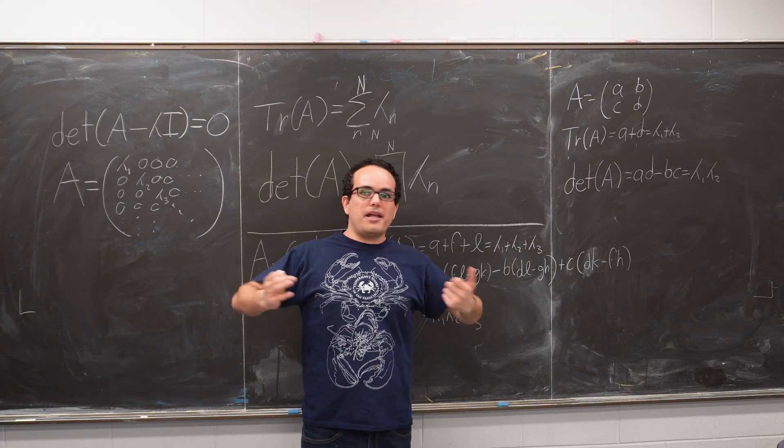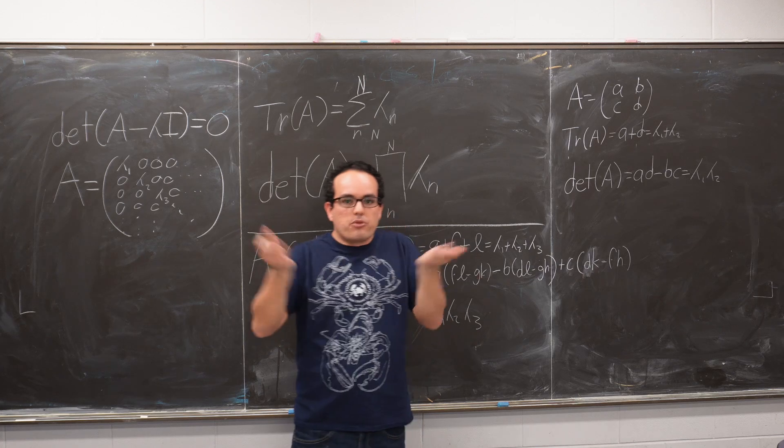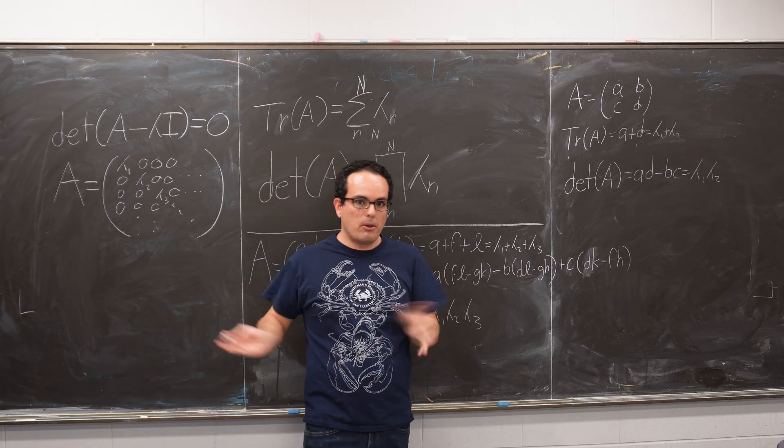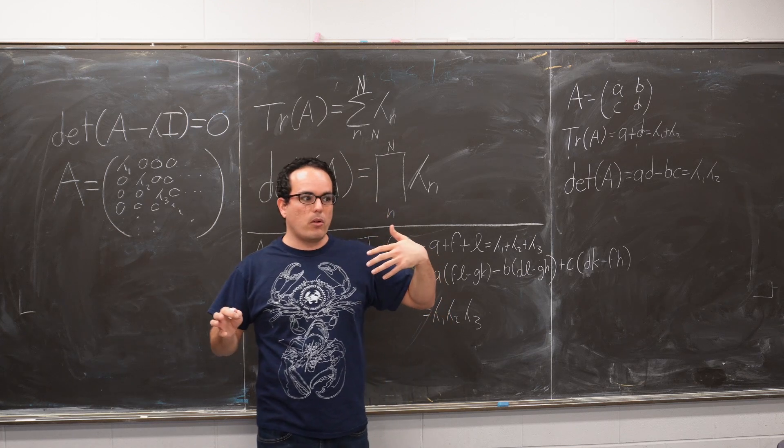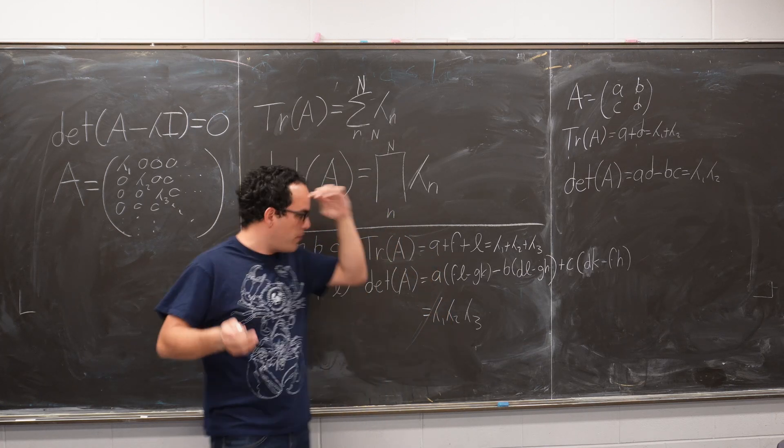And you may be thinking, well, I have a 3x3 matrix. And in fact, 3x3 matrices are very common, at least in physics, because we live in three spatial dimensions. So, for example, all the matrices in quantum mechanics that represent momentum are 3x3, anyway.